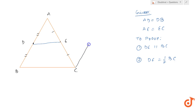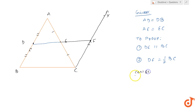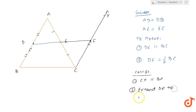So let's do a construction. From C, we draw a line CX which is parallel to AB. Then I extend DE to meet CX at a point, let's call it F. So the construction is: first, draw CX parallel to BA; second, extend DE to meet CX at F. Now what would I do next? I would prove these two triangles to be congruent.